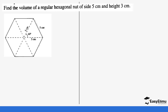Let's do another example: find the volume of a regular hexagonal prism of side 5 centimeters and height 3 centimeters. Remember how we drew the 3D structure of a hexagon — the height is 3 centimeters. We are going to calculate the area of one triangle, multiply it by six because there are six triangles, and then multiply the total area by the height.